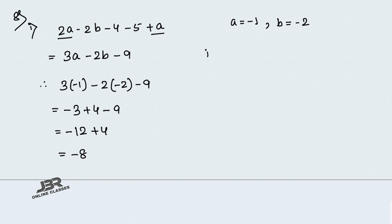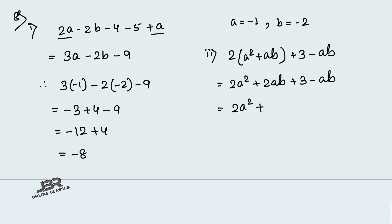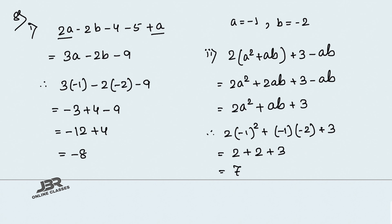Number 2: 2a² plus ab plus 3 minus ab plus 3 minus ab. Simplifying: 2a² plus ab plus 3. Now substituting a equals minus 1 and b equals minus 2: 2 into (minus 1)² plus (minus 1)(minus 2) plus 3. (Minus 1)² equals 1, so 2 into 1 equals 2. Minus into minus gives plus 2. So 2 plus 2 plus 3 equals 7.